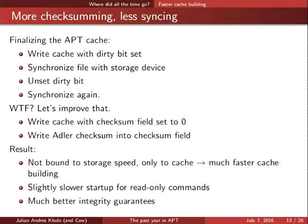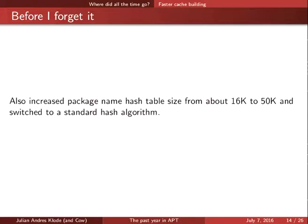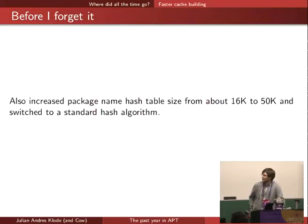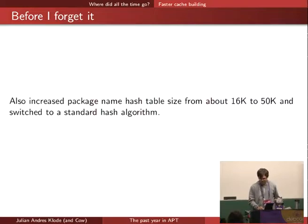I also increased the hash table size. We have a fixed hash table size where every package name is stored, and it was 16,000 slots, which was obviously not enough anymore since we have a lot more than 16,000 package names. So I increased it to 50,000 and switched to a different hash algorithm, the DJB algorithm, which is quite popular.